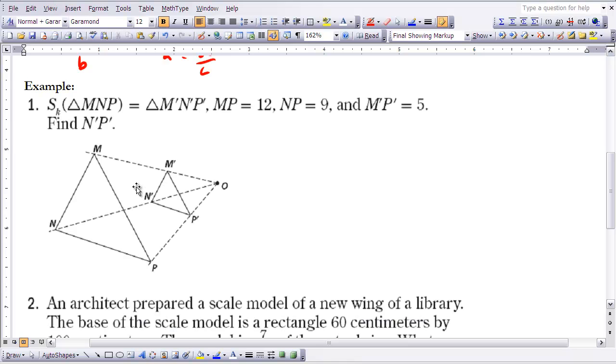All right, take a look at example one here. It says we're going to do a side S sub k on triangle MNP. Remember that's a size change of magnitude k on that triangle to get its image. We know that MP is 12, NP is 9, and M'P' is 5. Find N'P'.